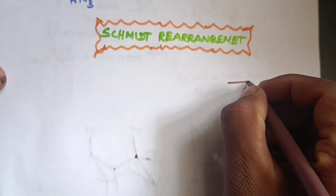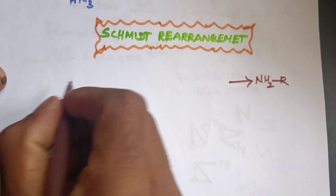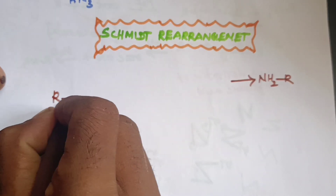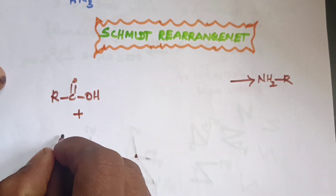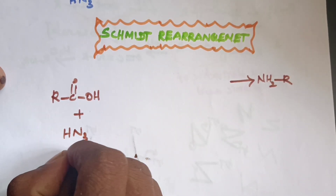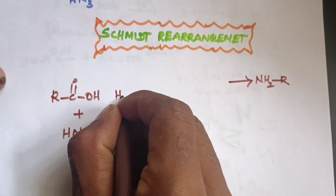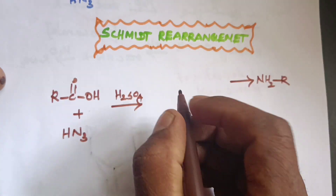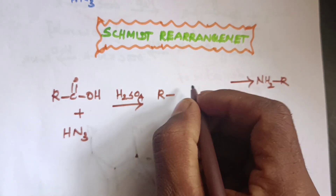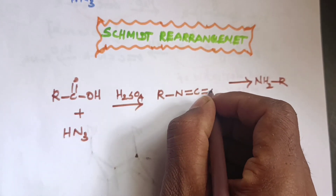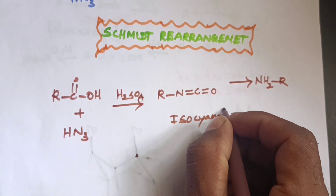In this rearrangement, amines are prepared from carboxylic acid. The carboxylic acid (R-C(=O)-OH) reacts with HN3, hydrazoic acid, under acidic conditions with H2SO4, to produce the intermediate isocyanate (N=C=O). This isocyanate is the key intermediate.